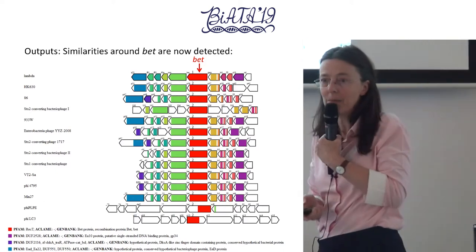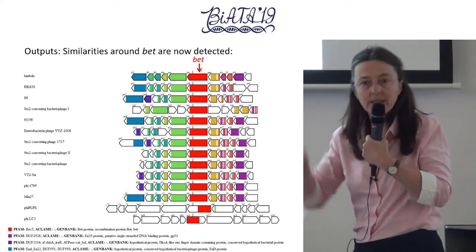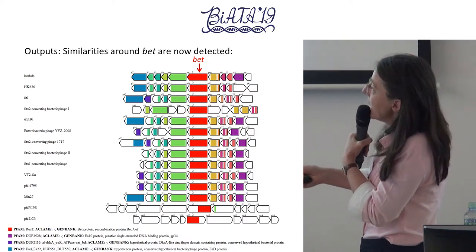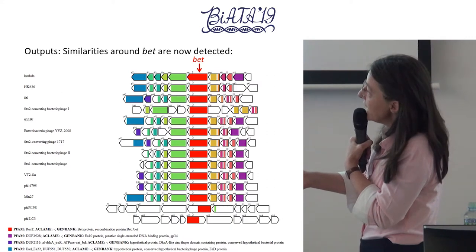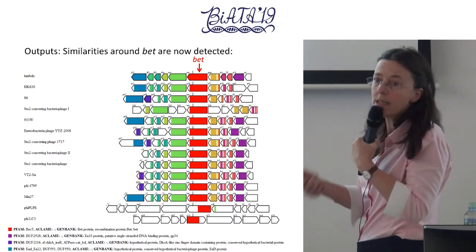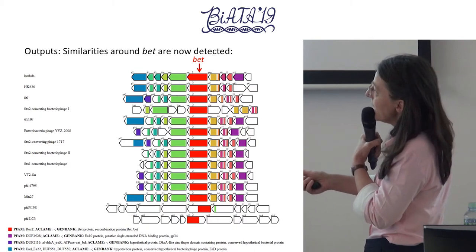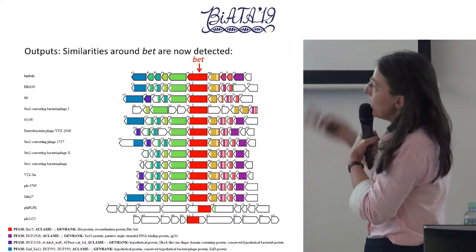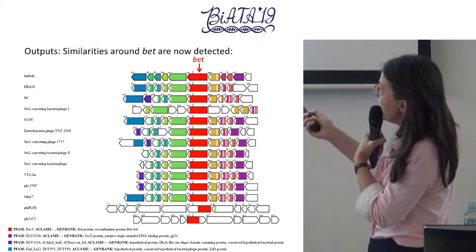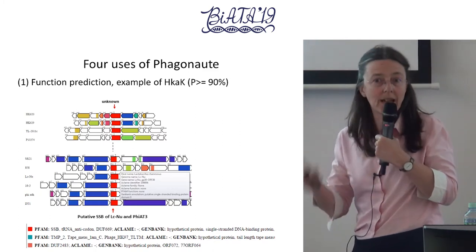Taking the same BET gene example in Phagonaut, you now see nicely colored genes all around — the context around BET genes is well-conserved. For each colored gene you get all predictions collected: the PFAM prediction (here it says RecT family, normal for BET), the GenBank annotations when available, and the ACLAME annotation. The tool has four uses: predicting new functions, finding co-occurring functional associations, identifying conserved positional proteins, and detecting evolutionary relationships.